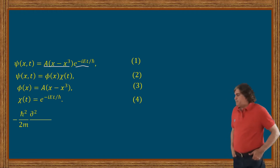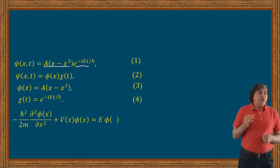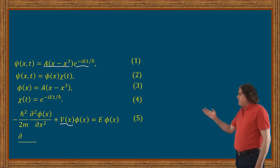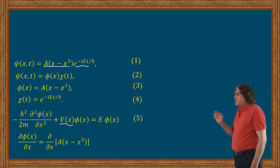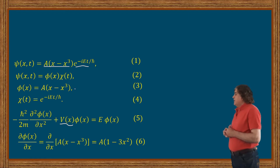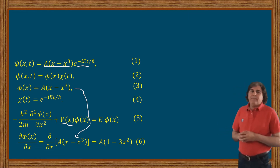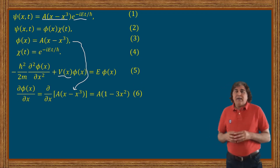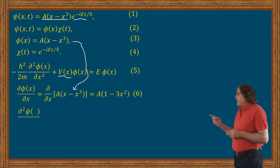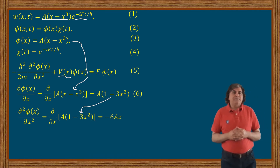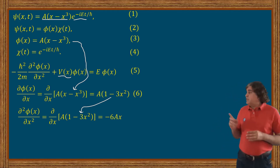In order to find the potential V(x), I first need to find the derivatives of φ(x) with respect to x. Applying this operator to the value of φ(x), I can write the first derivative as A(1 − 3x²). Taking the derivative with respect to position once more, I can find that the second derivative ∂²φ(x)/∂x² equals −6Ax.